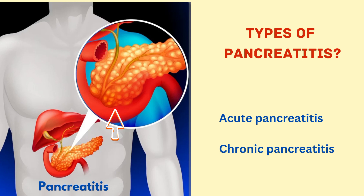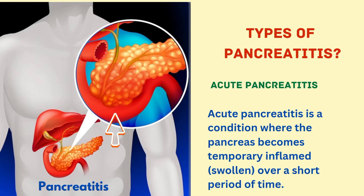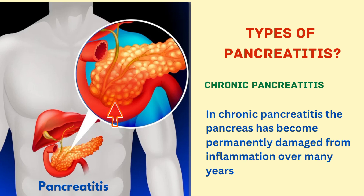Now let us see the types of pancreatitis: acute pancreatitis and chronic pancreatitis. Acute pancreatitis is a condition where the pancreas becomes temporarily inflamed and swollen over a short period of time. In chronic pancreatitis, the pancreas has become permanently damaged from inflammation over many years.